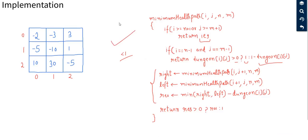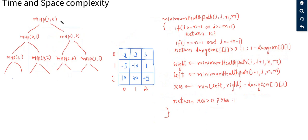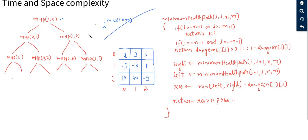Analyzing the recursive solution: the branching factor is 2 and the tree height is the max of rows and columns, giving time complexity O(2^200) for the largest dungeon. This will not work within the one-second judge limit, so we need to improve this solution.